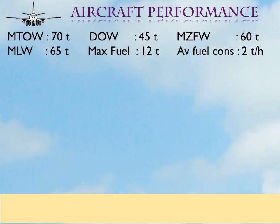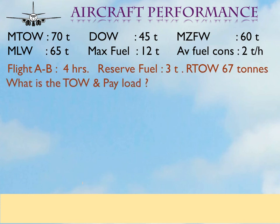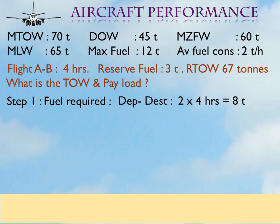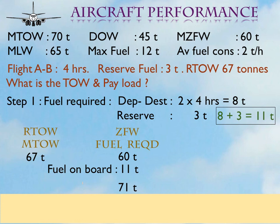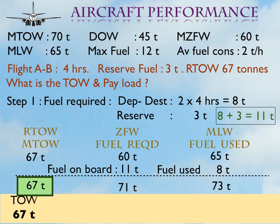Let us work out another example. For the same aircraft, the flight time is four hours and the reserve fuel required is three tons. From the performance graphs, the RTOW is restricted to 67 tons due to short runway length. Find out the payload and takeoff weight. The minimum fuel required is four times two plus three equals 11 tons of fuel. The RTOW is 67 tons. The MZFW-restricted takeoff weight is 60 plus 11 equals 71 tons. The max landing weight restricted takeoff weight is 65 plus fuel used, equals 73 tons. The least is 67 tons, thus the payload is 11 tons.